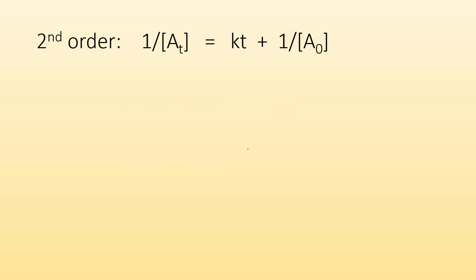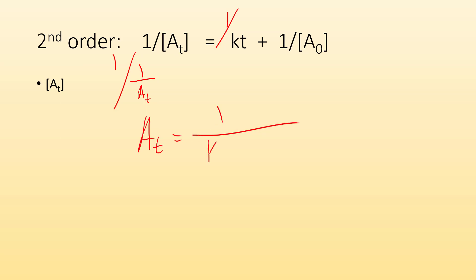Second order — we don't have to worry about log rules, but it has its own challenges. If I want to solve for the amount at that time, I have 1 over the amount at that time. So to get it to be the numerator, I do 1 divided by that whole thing, and I've got to do it to the other side as well. So the amount at that time equals 1 divided by (kt plus 1 over the starting amount).